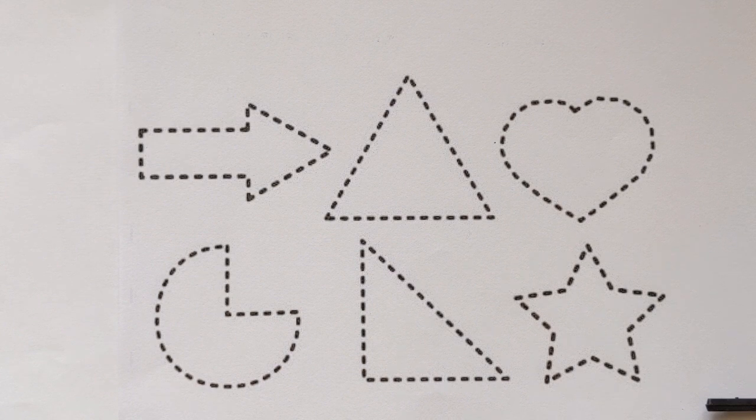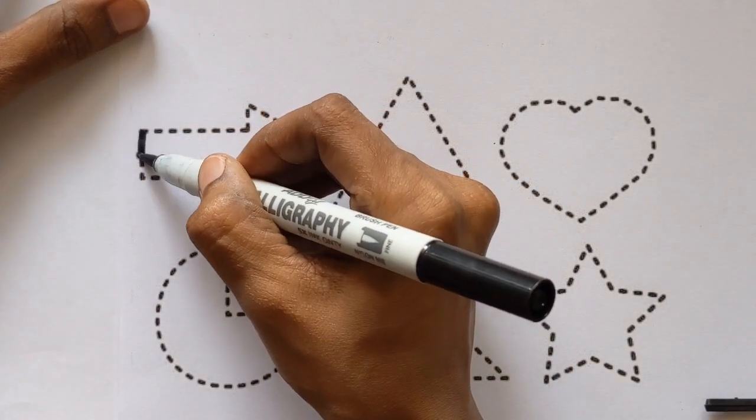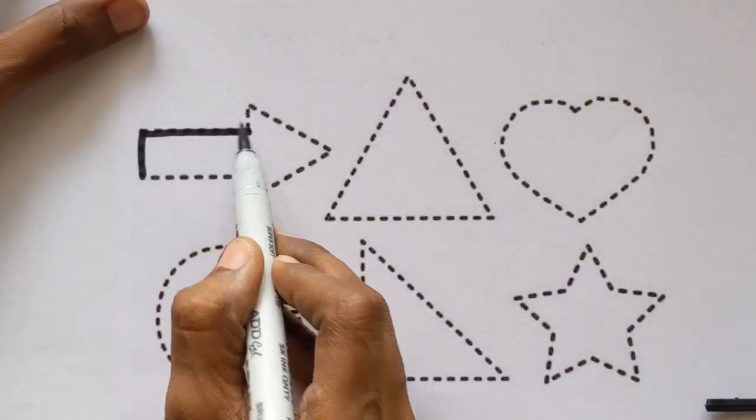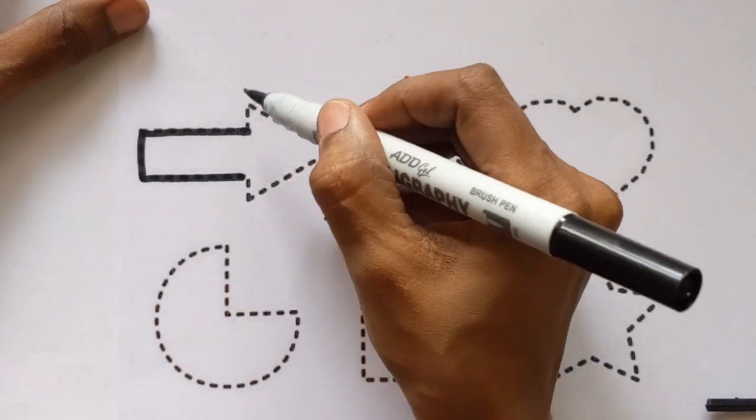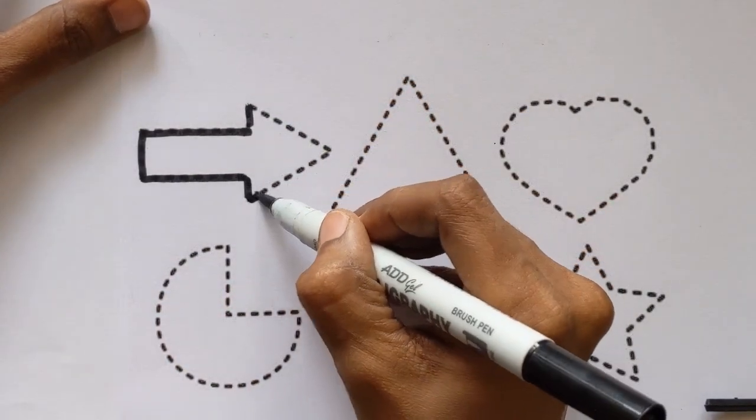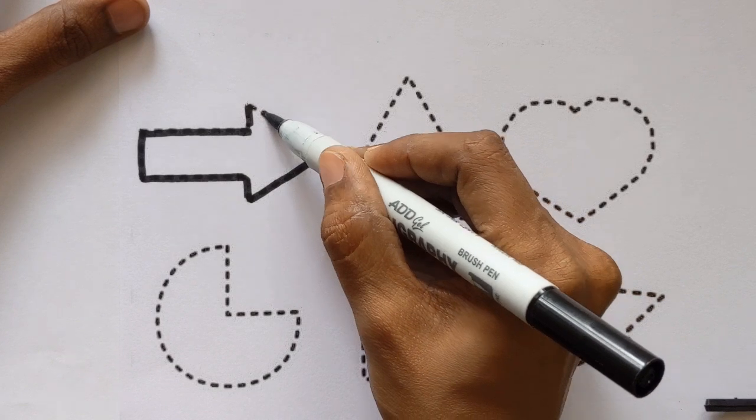Let's draw the shapes just by following the dots. Arrow.